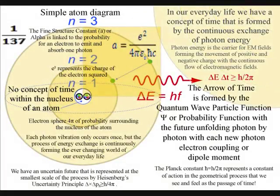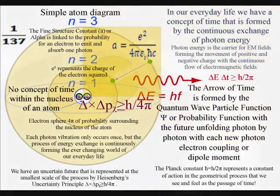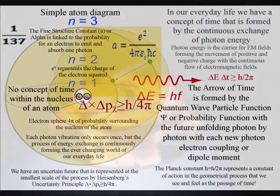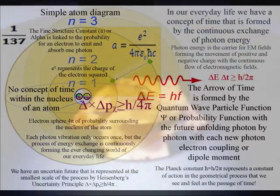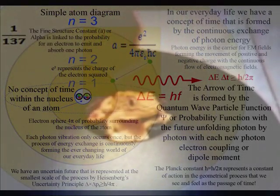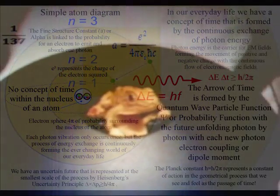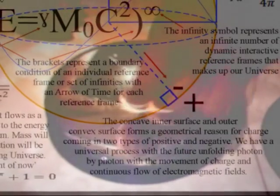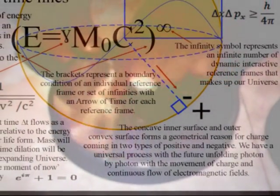The great advantage spherical geometry has over finite loops is that the interior of a sphere is naturally three-dimensional. Also, the two-dimensional surface of the sphere can form a dynamic two-dimensional boundary condition for the use of the holographic principle, with the inner concave surface representing negative charge and the outer convex surface representing positive charge.